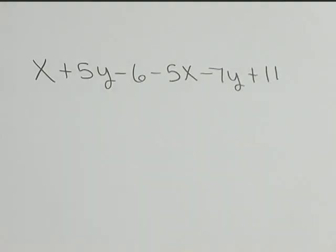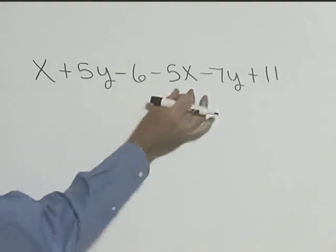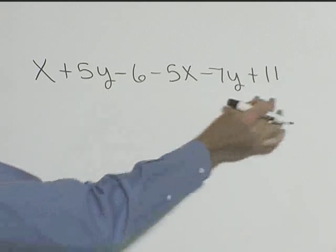For this problem, let's combine like terms. We have x values, we have y values, and then we have just numbers.